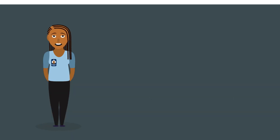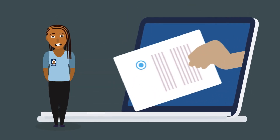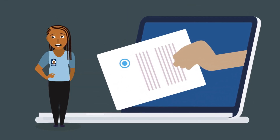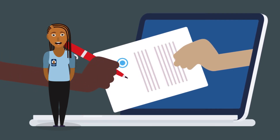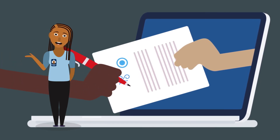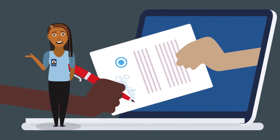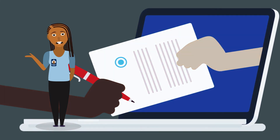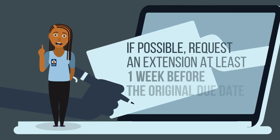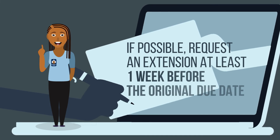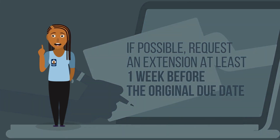Professors or instructors need to approve all disability-related extensions. So if your letter of accommodation says that you can ask for extra time to complete assignments, make sure to give your profs enough time to approve it. And remember, extensions aren't guaranteed. It's best to request an extension a week before the original due date, but it may not always be possible.